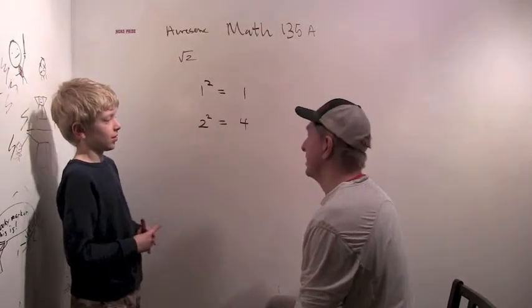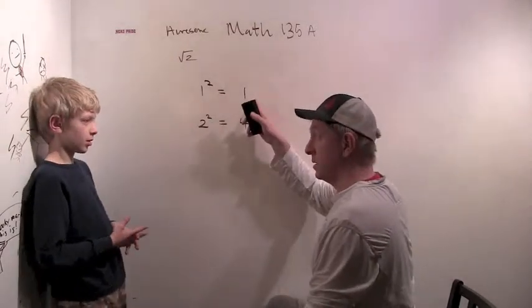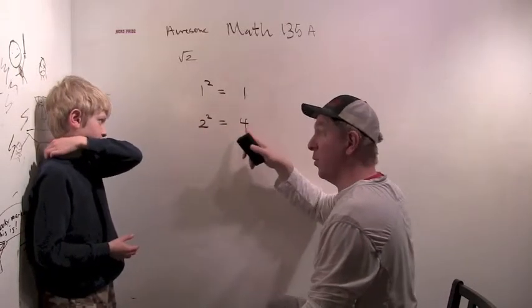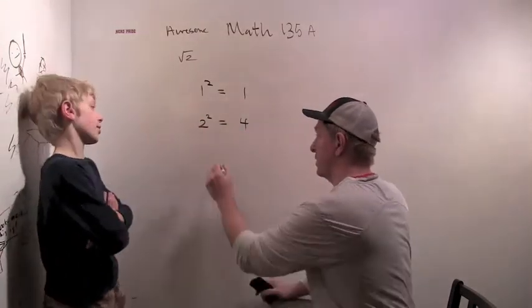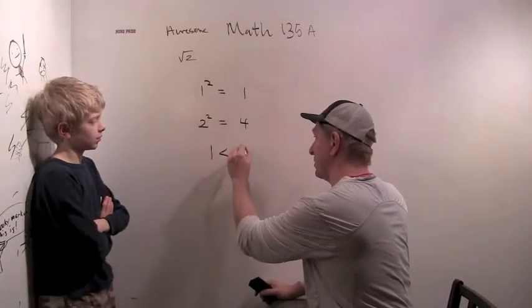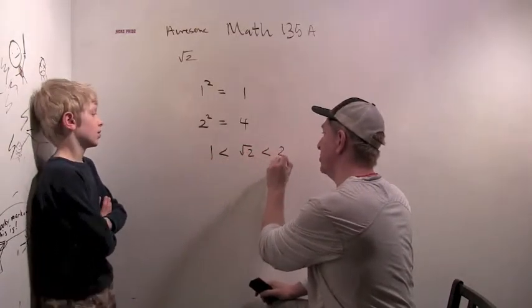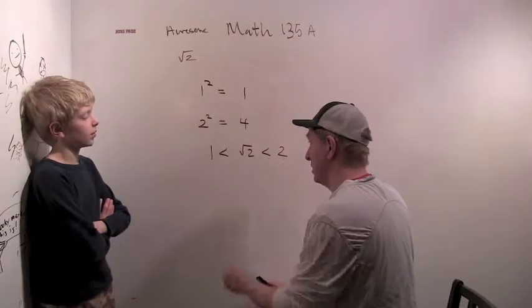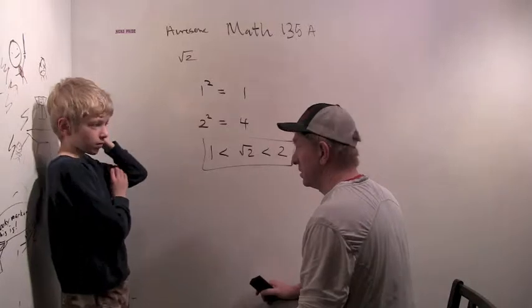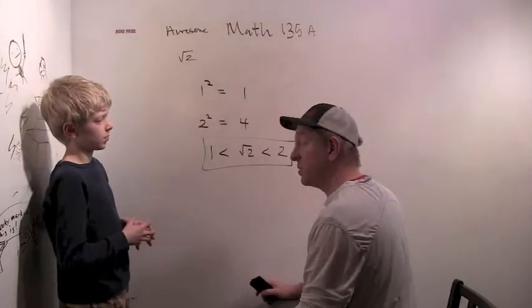Sorry, I got distracted. 1 squared is 1. The next integer is 2 and 2 squared is 4. So it can't be an integer. So we said before that must mean that 1 is less than the square root of 2, which has to be less than 2. That's what we talked about in the last section. So the square root of 2 cannot be an integer. So that's a surprise.